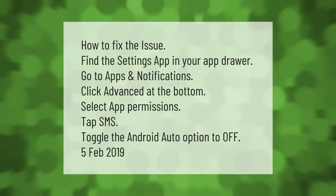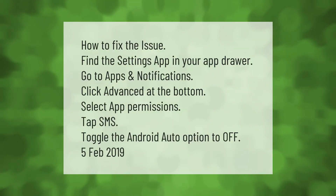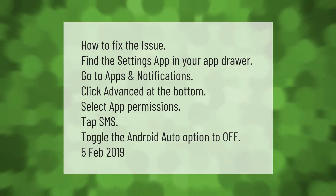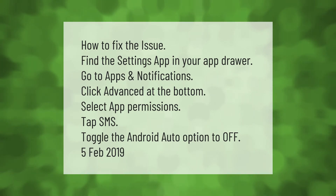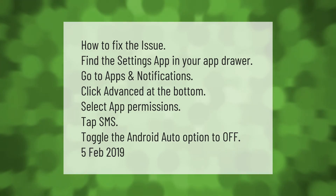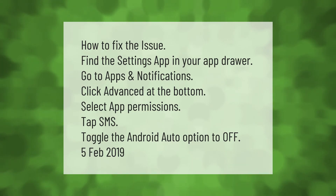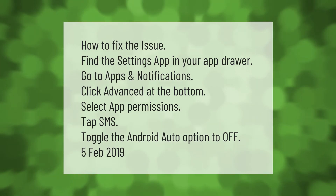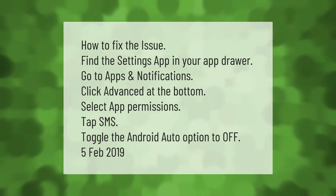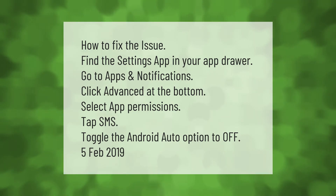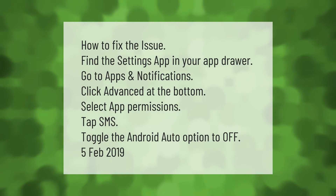To fix the issue, find the Settings app in your app drawer, go to Apps and Notifications, click Advanced at the bottom, select App Permissions, tap SMS, and toggle the Android Auto option to off.